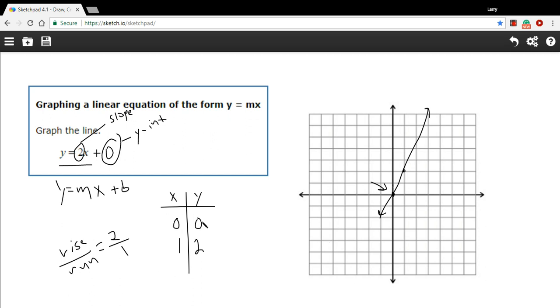So you can make a chart or you can use the slope intercept shortcuts. Either way should allow you to graph the equation of a line like this.